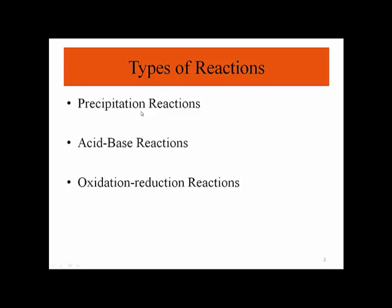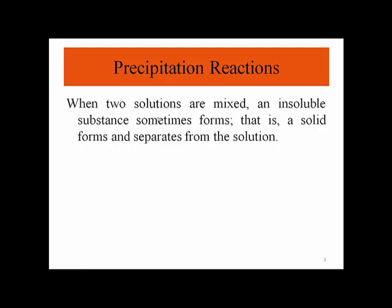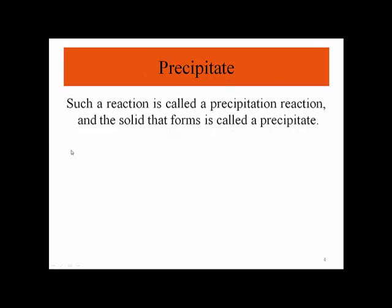So what is a precipitation reaction? When two solutions are mixed, an insoluble substance sometimes forms. That insoluble substance is a solid and separates from the solution. This solid is called a precipitate. So such a reaction is called a precipitation reaction and the solid that forms is called a precipitate.